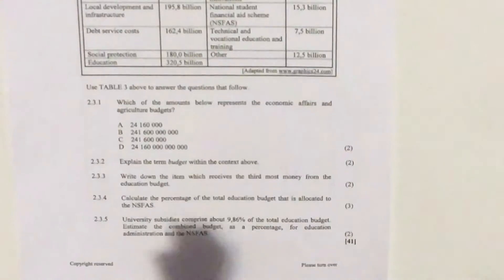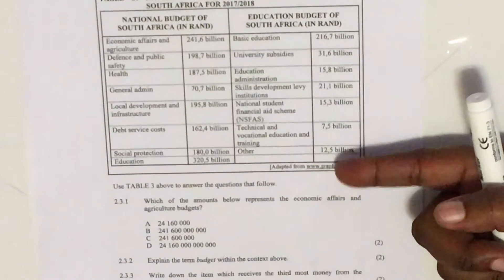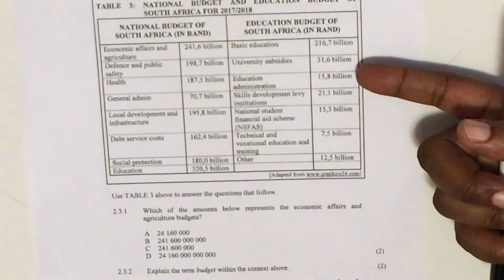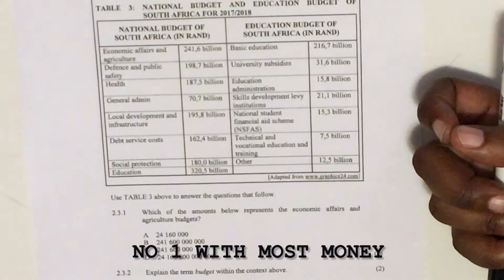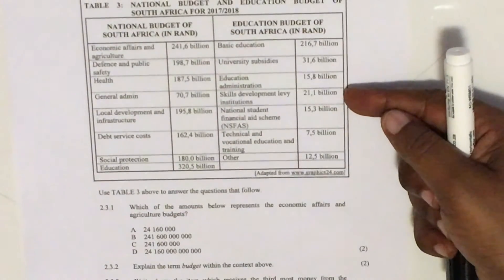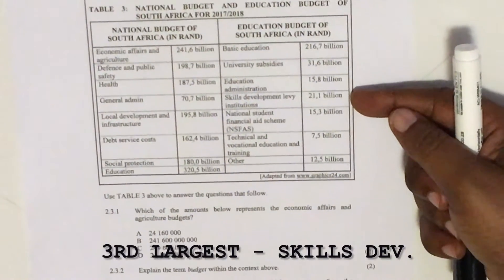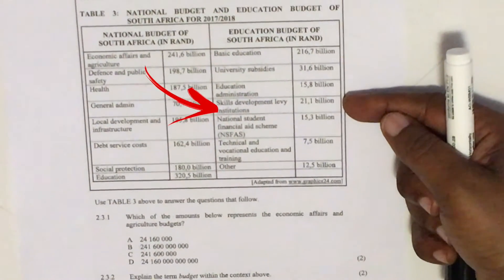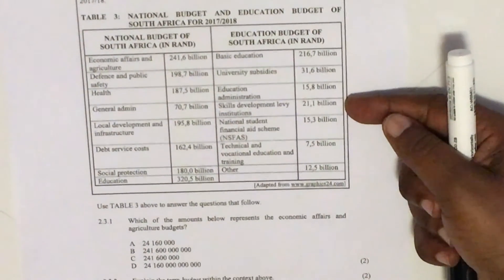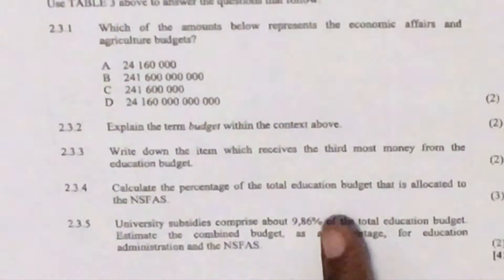Let's go to question 2.3.3: write down the item which received the third most money from the education budget. We are concentrating on the education budget only. The largest amount is basic education at 216.7 billion. The next largest is university subsidies at 31.6 billion. The third largest is skills development levy institutions. So your answer for 2.3.3 is: skills development levy institutions.